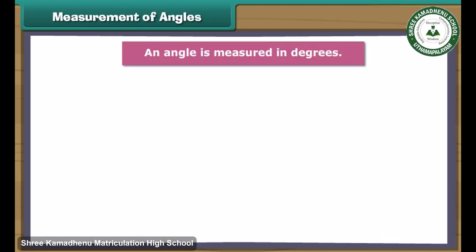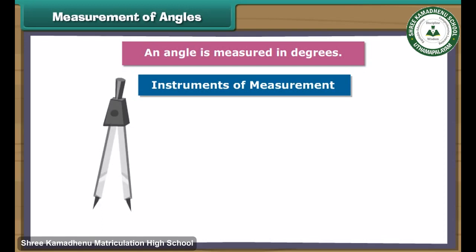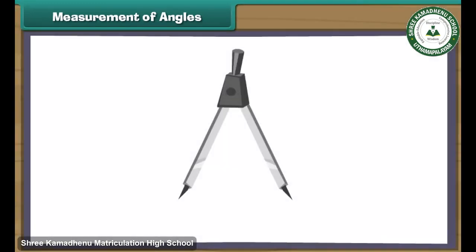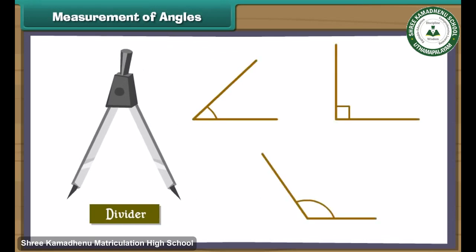An angle is measured in degrees. Let us now measure angles with two different instruments: a divider and a protractor. Look at this object — it is called the divider. We can use it to measure angles. Let us see how.